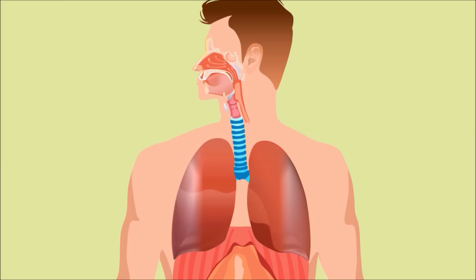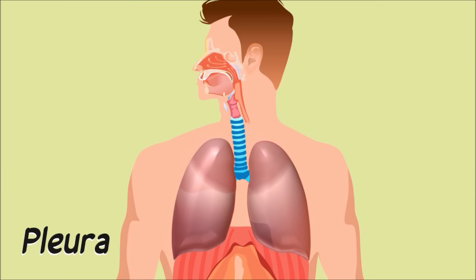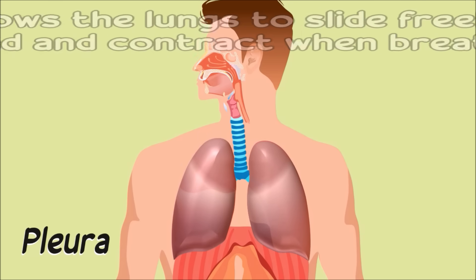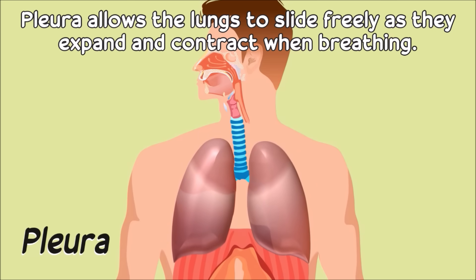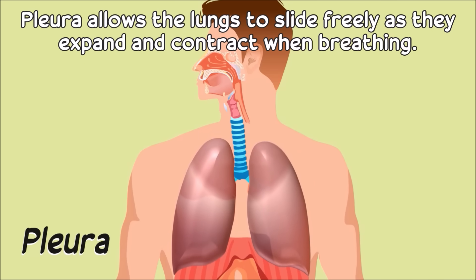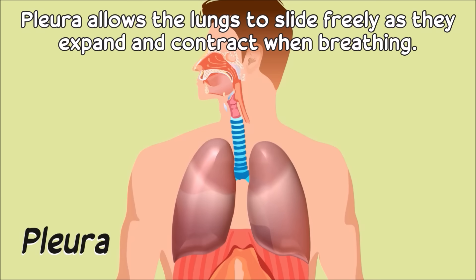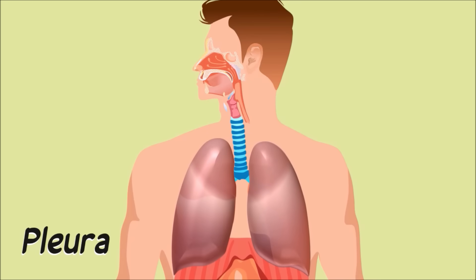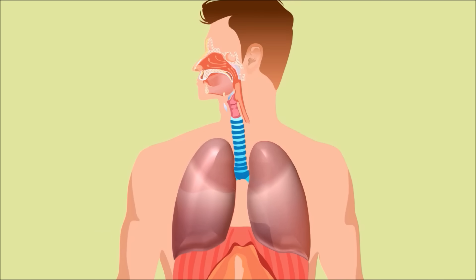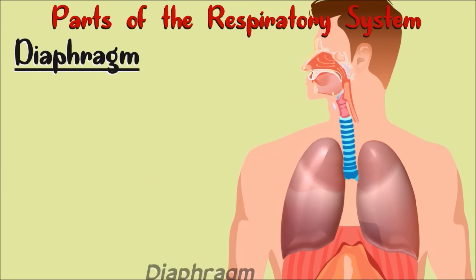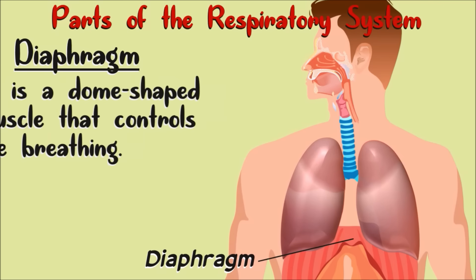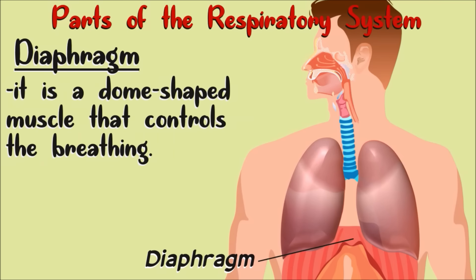The lungs are enclosed in a coating called the pleura. The pleura allows the lungs to slide freely as they expand and contract when breathing. Below the lungs is a dome-shaped muscle called the diaphragm. The diaphragm is the one that controls breathing.